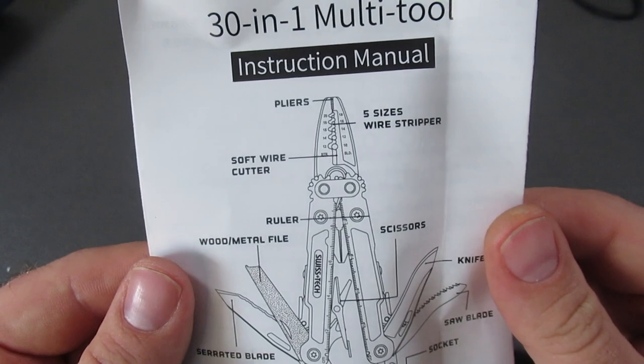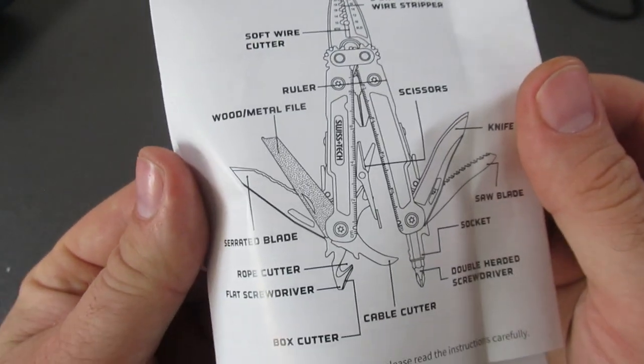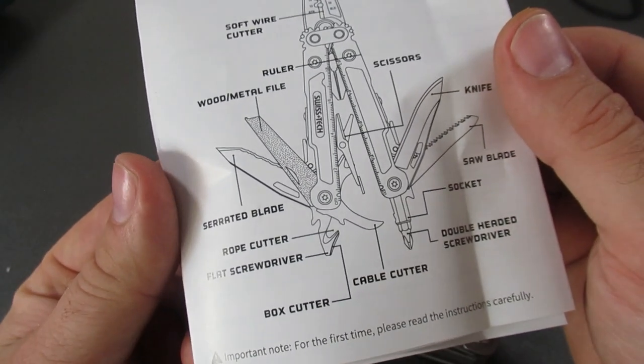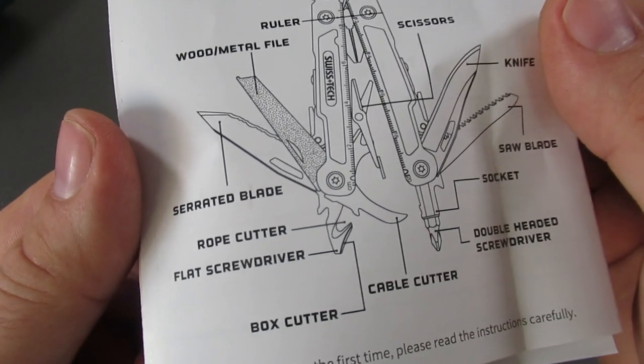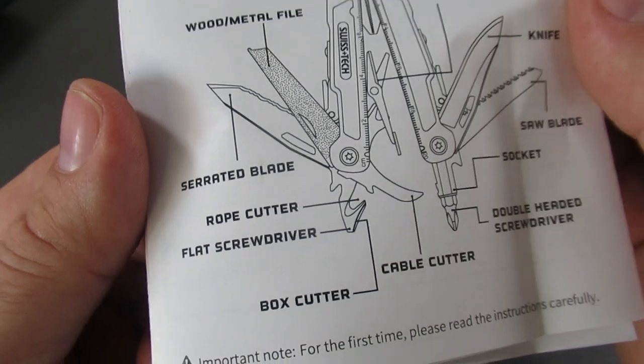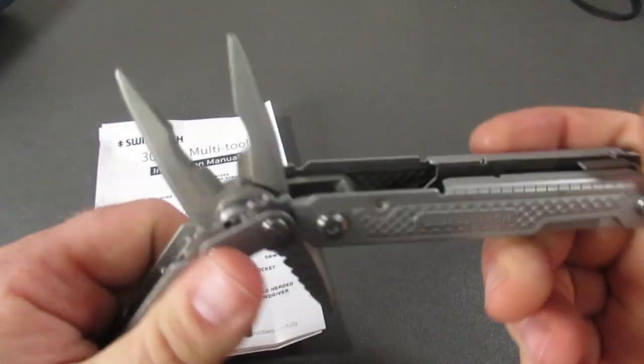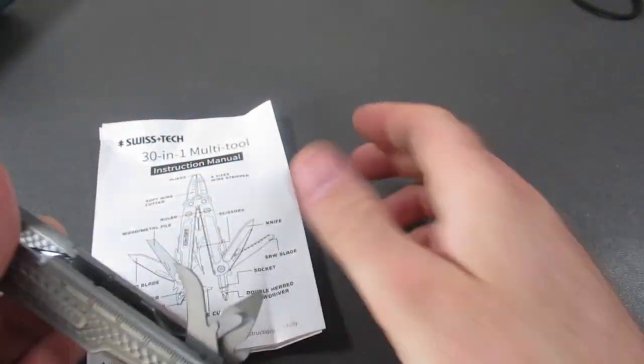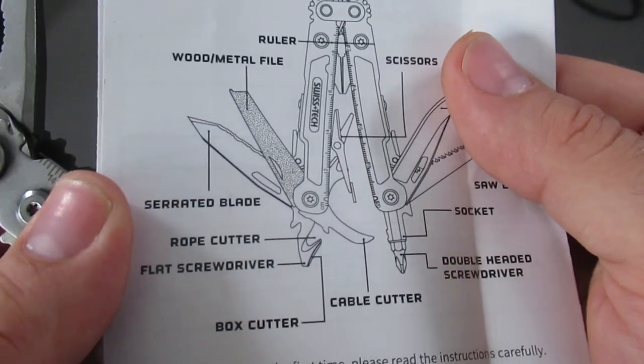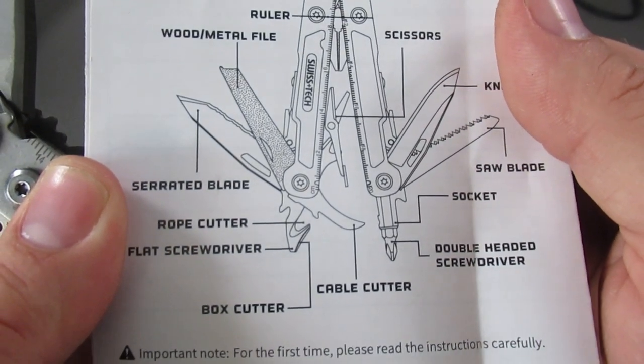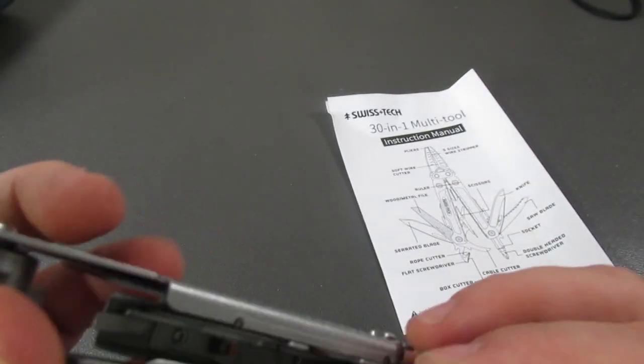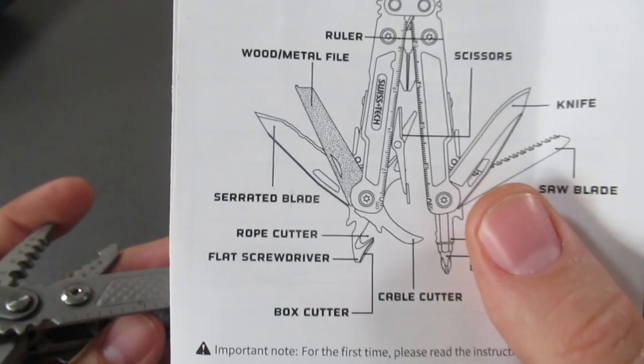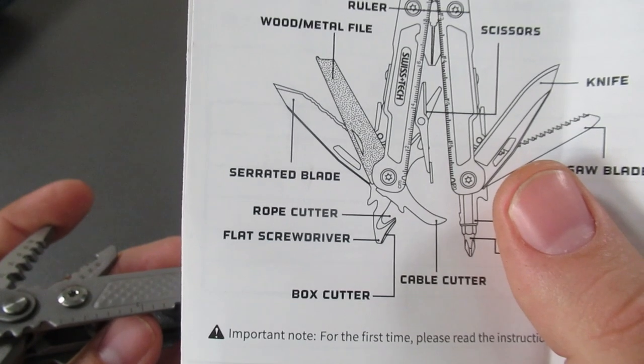So we have the pliers, five sizes, a wire stripper. We have the ruler, the file, the serrated blade, the rope cutter, flat screwdriver, a box cutter. So they call that a screwdriver on the end. I don't think I looked into that. Okay. So this right here, the screwdriver and the box cutter and cable cutter. So they have this as the box cutter as well. That's unique. Not only a rope cutter, but a box cutter.